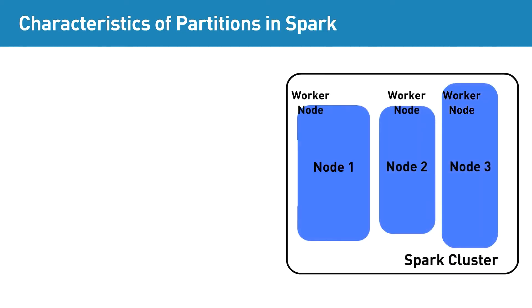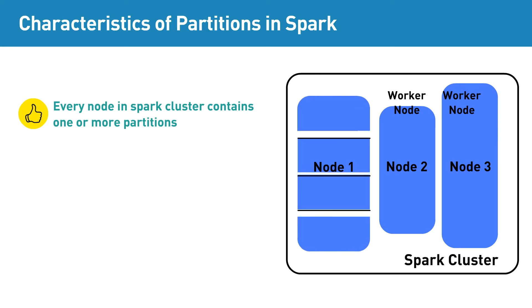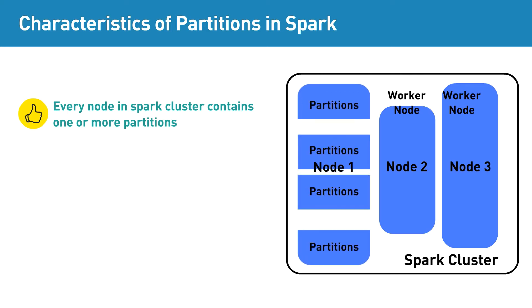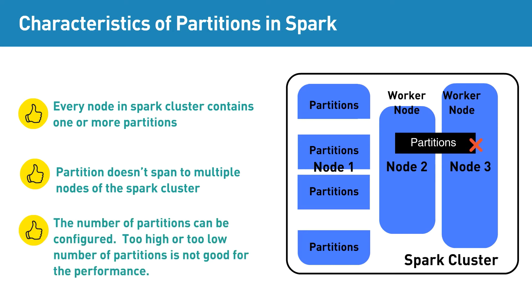Now that we have seen what RDD partitioning is, let's look at some of the characteristics of partitions in Spark. One, every node in the Spark cluster contains one or more partitions. Two, a partition doesn't span to multiple nodes of the Spark cluster. Three, the number of partitions can be configured. Too high or too low a number of partitions is not good for performance.